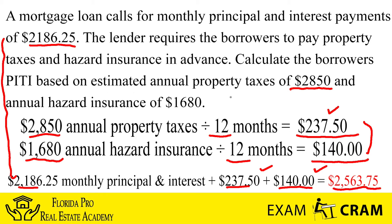When they ask you what the total PITI is, all you have to do is factor all these components in, do a little division by 12 for the months, and you'll get your PITI.